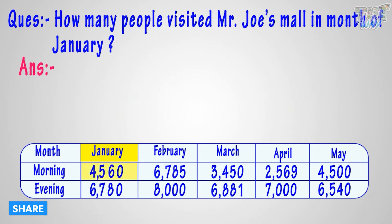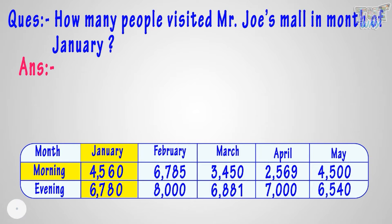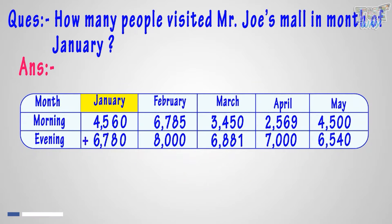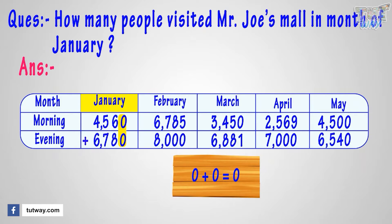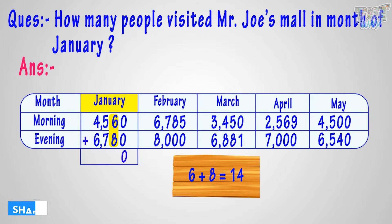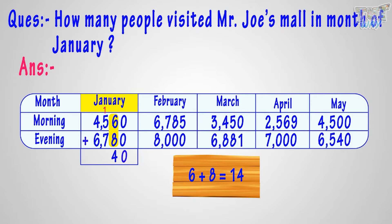We see 4,560 people visited the mall in the morning and 6,780 people visited the mall in the evening. So let's add both. Adding zero plus zero equals zero, so write zero in the sum below the ones place. Adding six plus eight we get fourteen, so write the ones place digit — that is four — in the sum at tens place, and carry over one to the hundreds place.